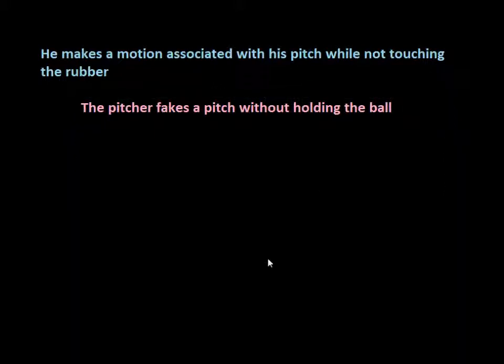This would pop up if a team attempts to pull off what is called the hidden ball trick, where a player other than the pitcher would have the ball. Maybe if there's a runner on first base, the first baseman somehow would have the ball rather than the pitcher. This is a legal play, but the pitcher cannot go so far as to get up on the mound and actually fake a pitch.